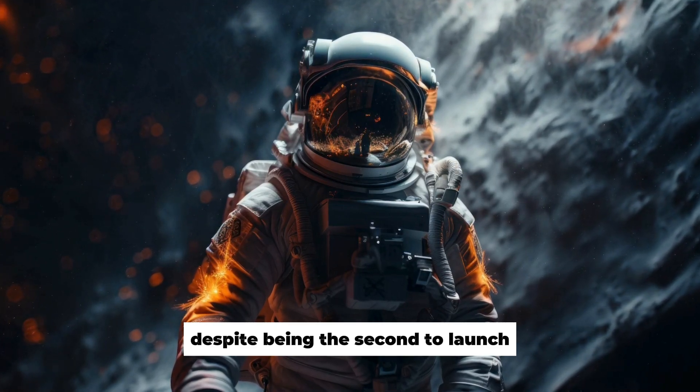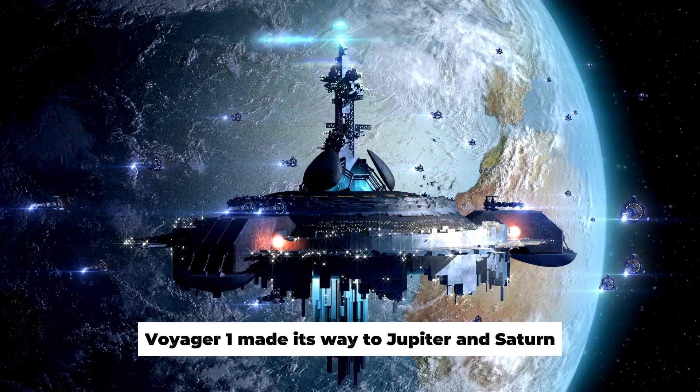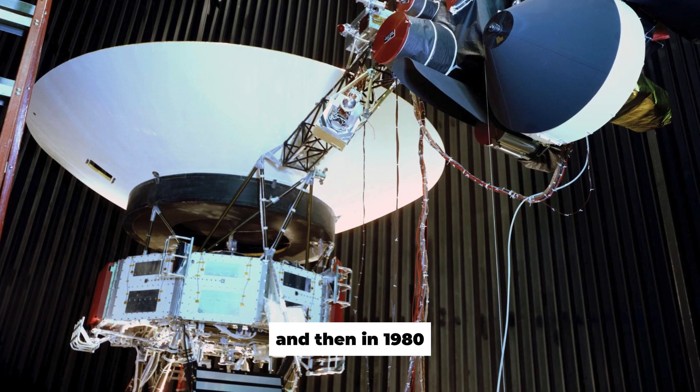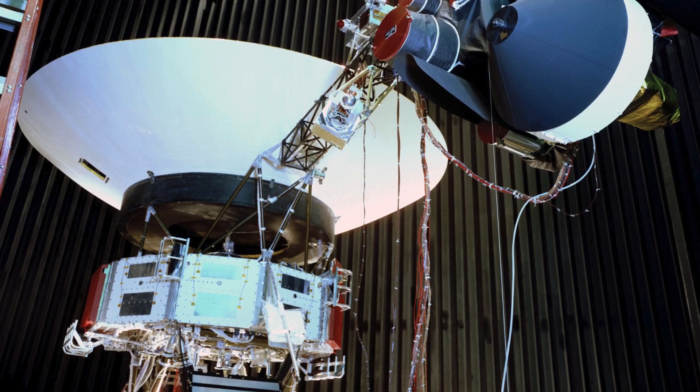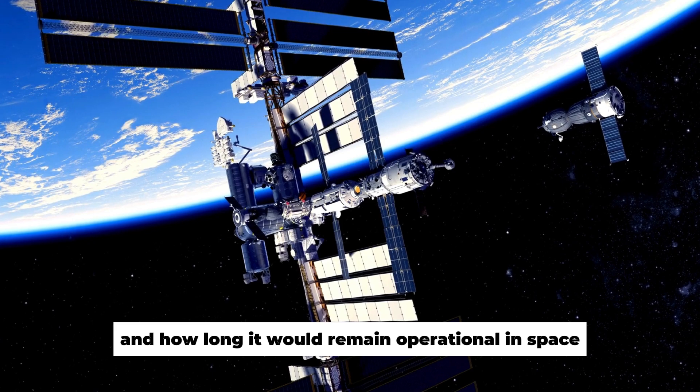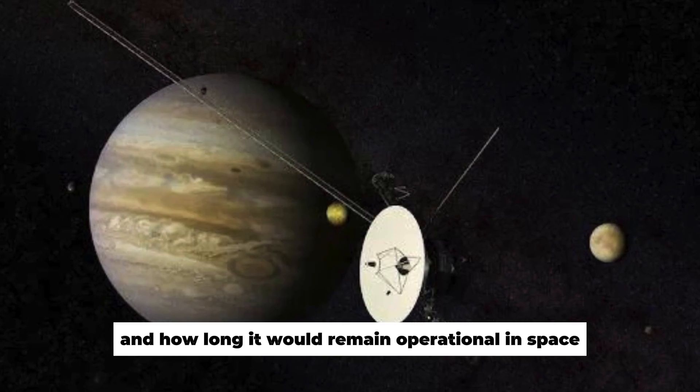Despite being the second to launch, Voyager 1 made its way to Jupiter and Saturn first in 1979, and then in 1980. But no one had quite expected just what a remarkably long journey Voyager 1 was headed for and how long it would remain operational in space.